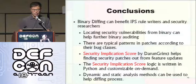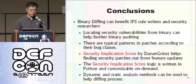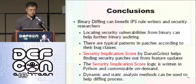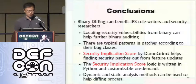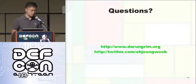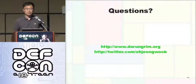Conclusions: binary diffing can benefit IPS rule writers, AV rule writers, and anyone like that. It can also benefit exploit writers — if you are interested in writing exploit modules, you should start with binary diffing, because in that way you can find something nobody ever found. There are typical patterns inside patches that you can use for binary diffing, captured by the security implication score in DarunGrim 3. You can use dynamic analysis or static methods for binary diffing — and dynamic analysis is very helpful for writing one-day exploits. Any questions? Looks like we have a Q&A room, so come over and ask your questions. Thank you.